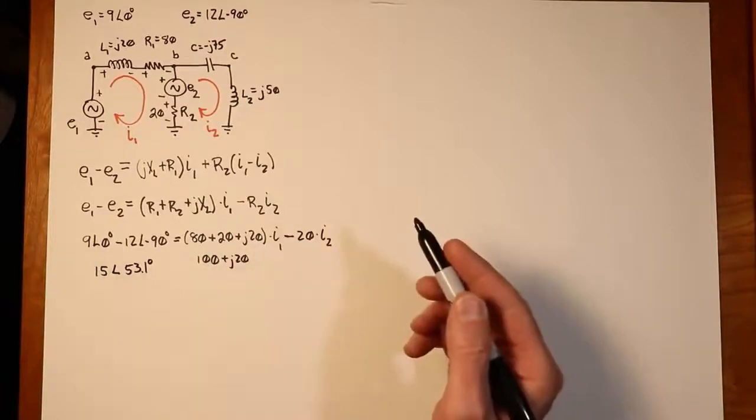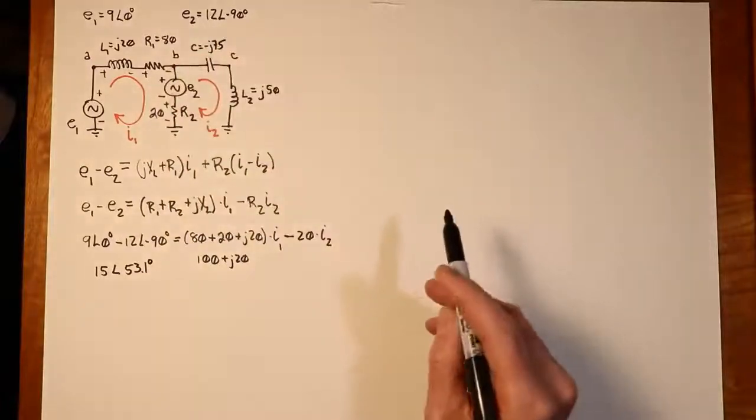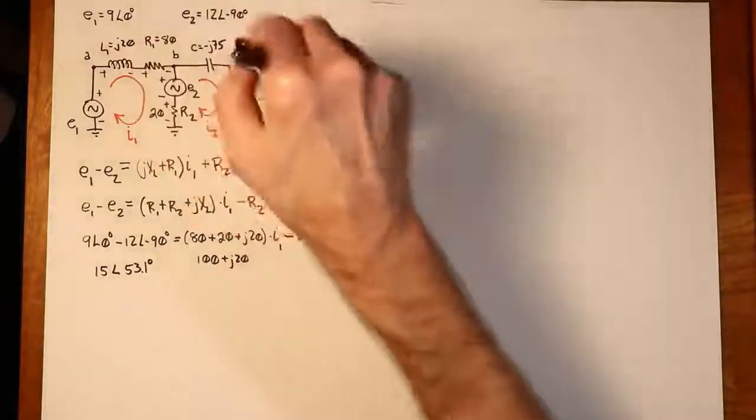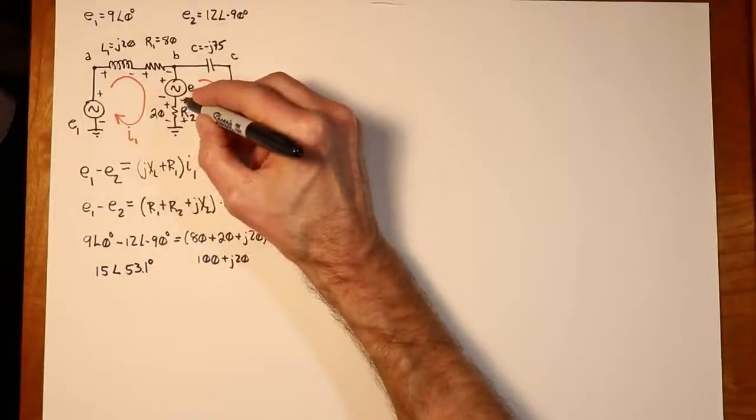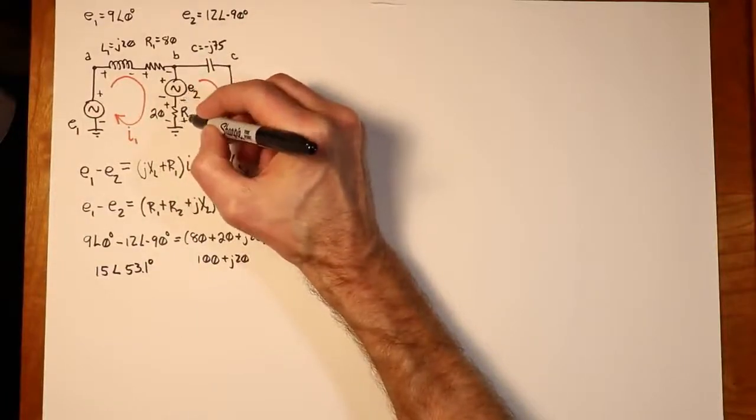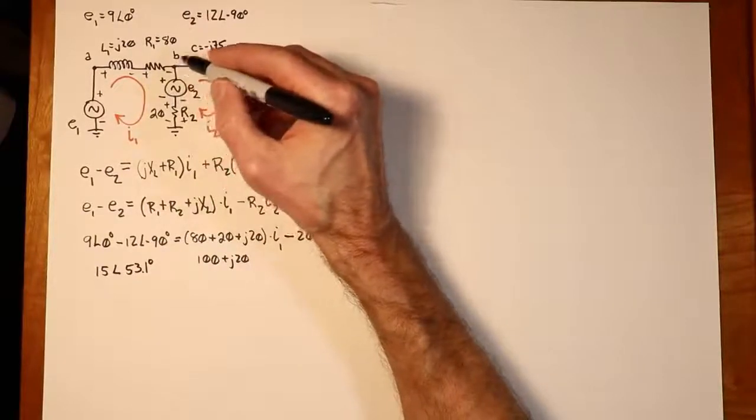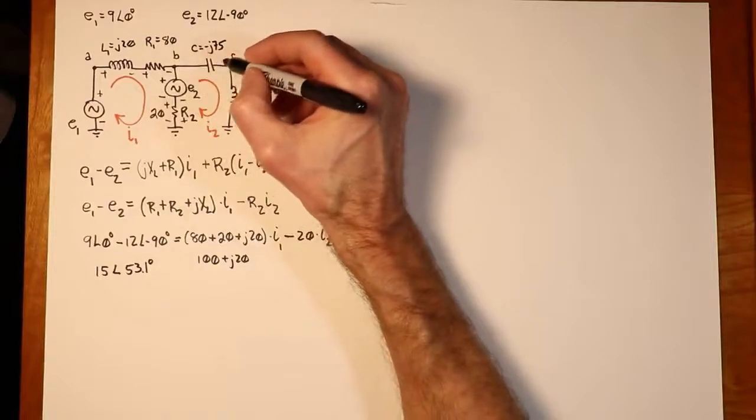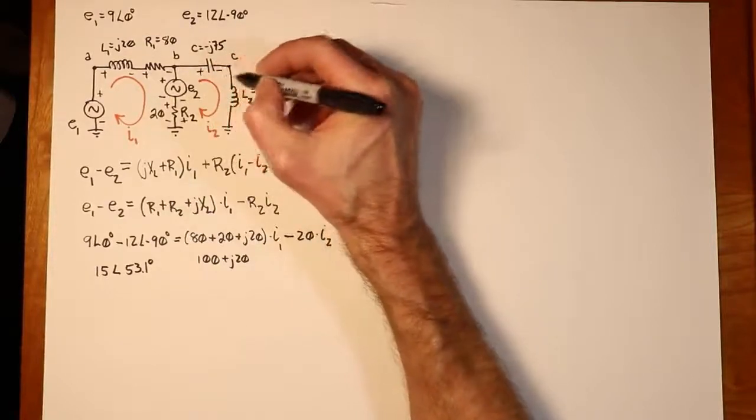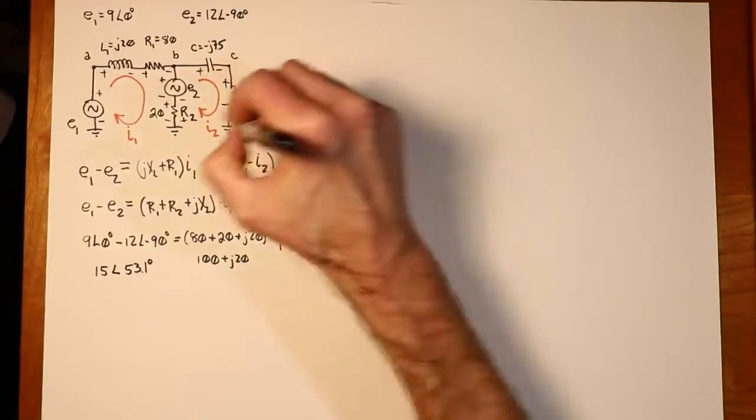Now let's turn our attention to the second equation, the second loop, the I2 loop. What do we have over there? Well, as we go through here, I'm just going to start from ground up. We're going to see a plus to minus ground up on R2. The reference polarity on E2 is minus to plus. Then we have the drop on X of C. That will be plus to minus. And then finally the drop on X of L, number 2.